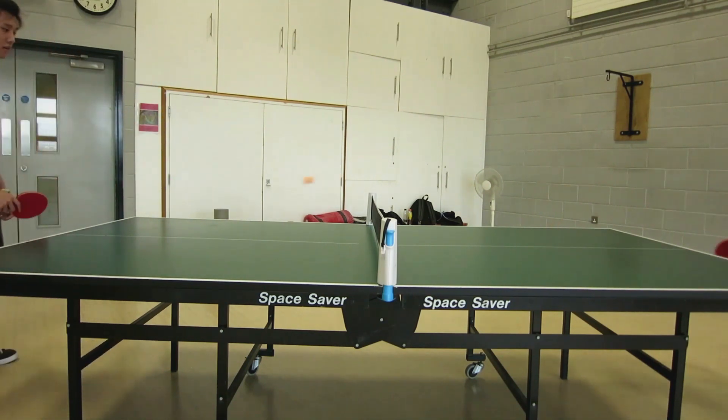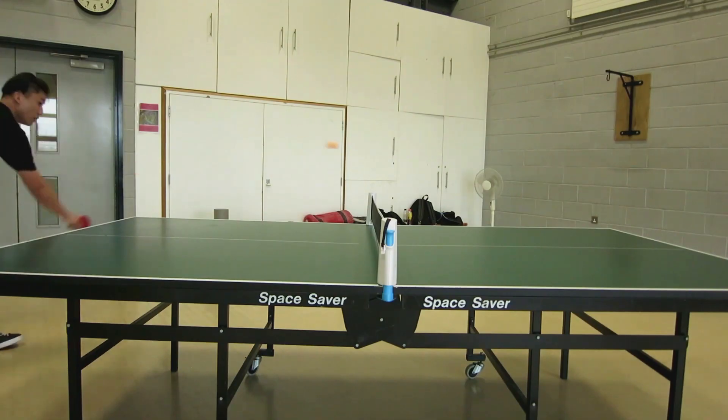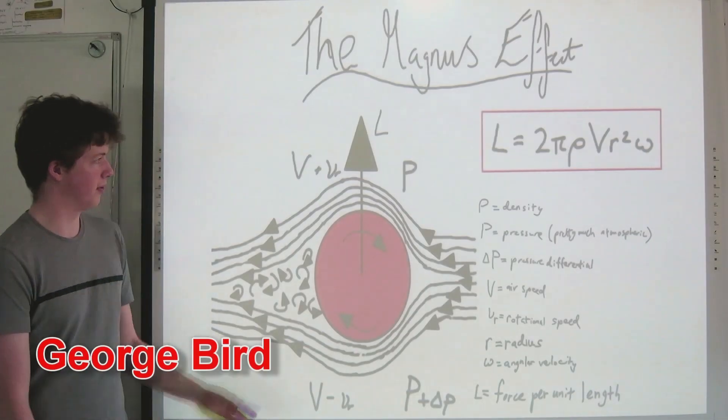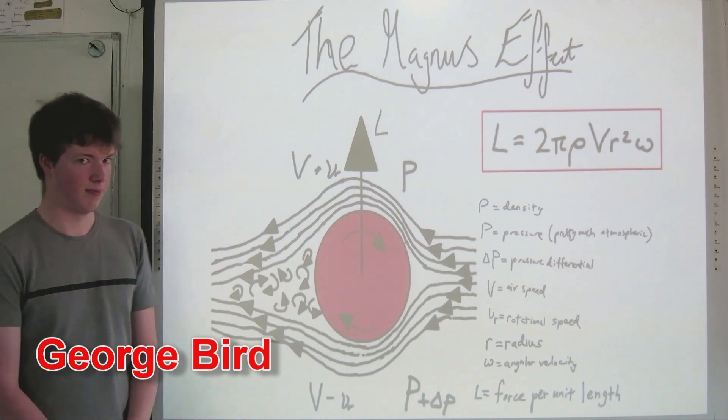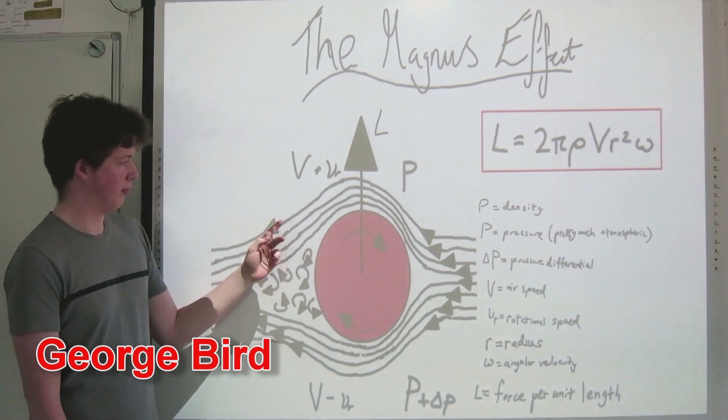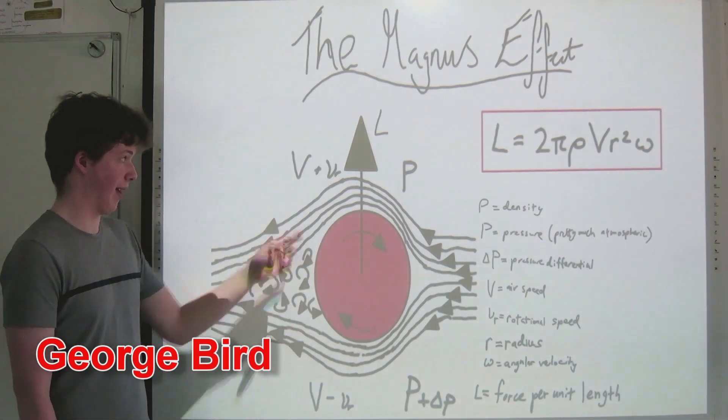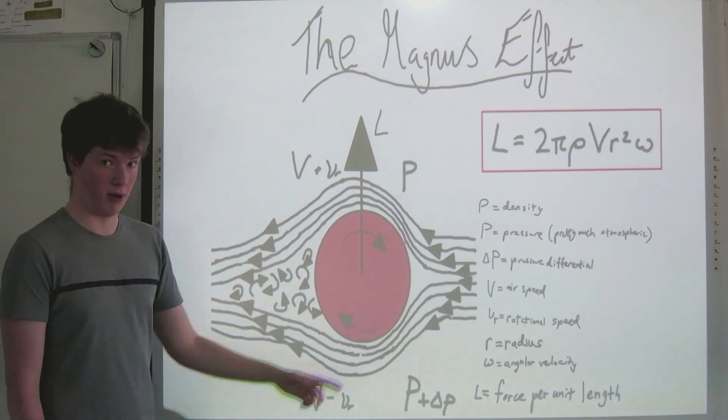We will now explain the mechanism behind the Magnus effect. The Magnus effect occurs due to the difference in velocity between the top and the bottom of the ball. At the top, the ball spins against the direction of airflow, so we add its rotational velocity to the airspeed. At the bottom, the reverse is true.